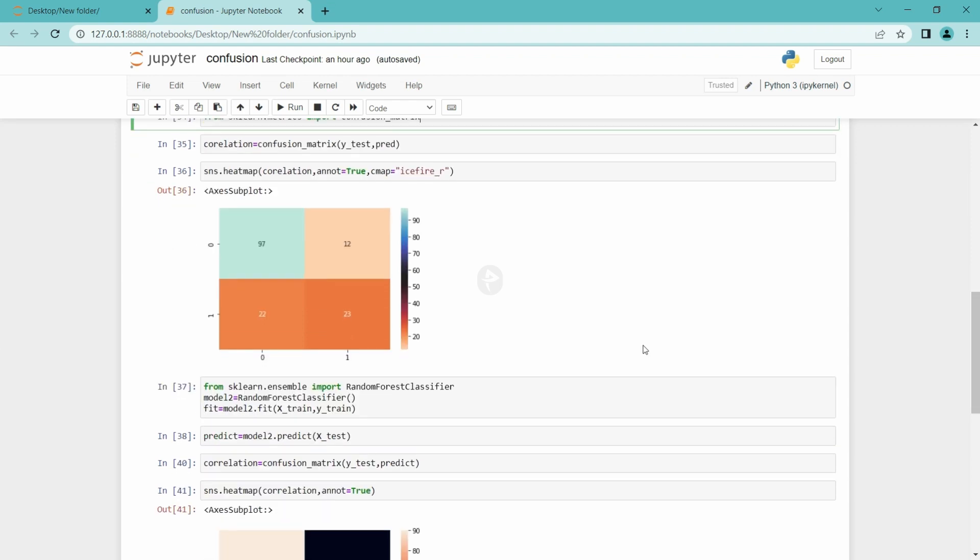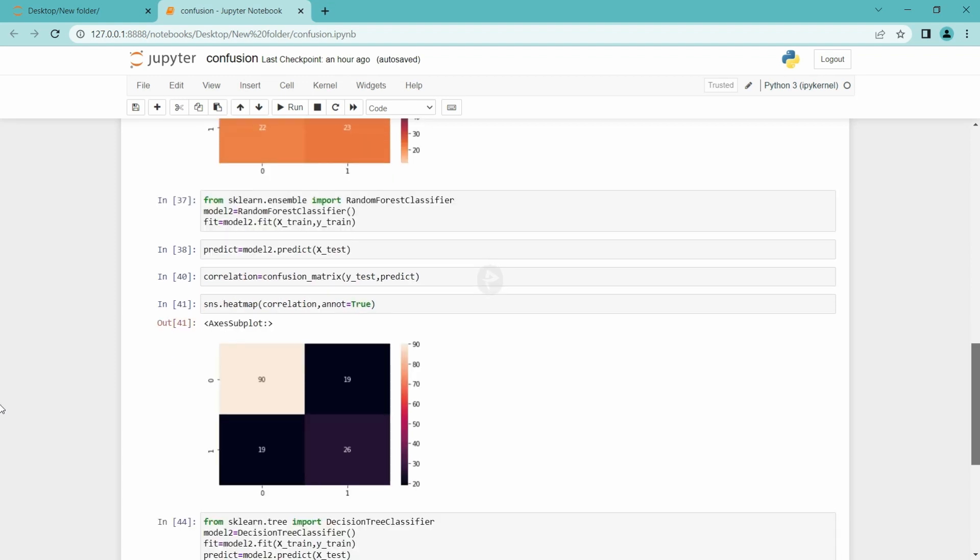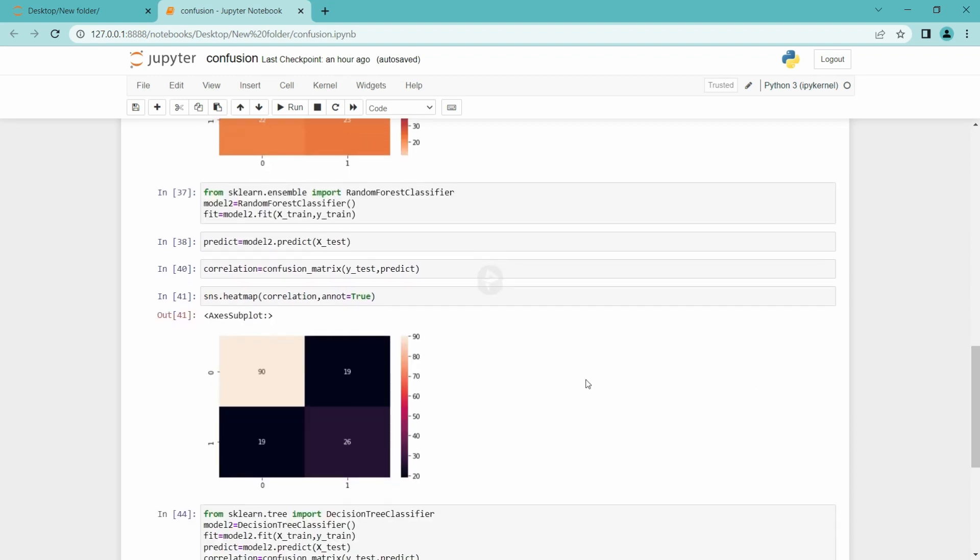So next, what I have done is I have imported another model, which is random forest classifier. I have trained it and used it for prediction. Then with the help of seaborn I have plotted the confusion matrix. Here also you can see in 90 cases it predicted correctly 0 as 0, and in 26 cases it predicted correctly 1 as 1. But in 19 cases and 19 cases it predicted wrongly.